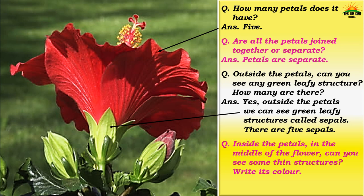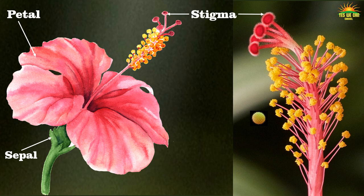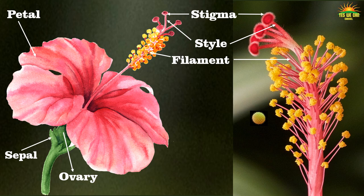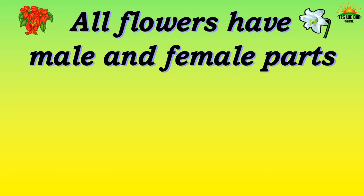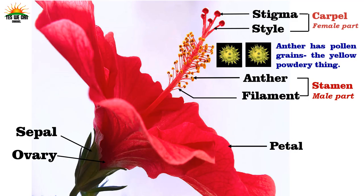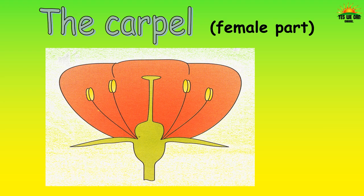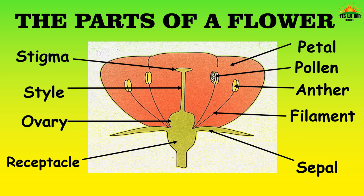Inside the petals, in the middle of the flower, can you see some thin structures? Their color is yellowish. Let's look carefully at the hibiscus flower — this is the stigma, this is the style, this is the ovary, this is the filament, and this is the anther. The anther has pollen grains — the yellow powdery thing. All flowers have male and female parts. Carpel is the name for the female part of the flower; stamen is the name for the male part. The carpel has stigma, style, and ovary. The stamen has anther, filament, and pollen grains. This is the figure showing all the parts of a flower.